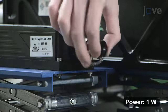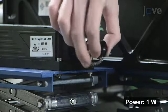This schematic provides information on the optical setup with the continuous laser. A convex lens controls the laser beam size. A cylindrical lens expands the beam to a sheet.